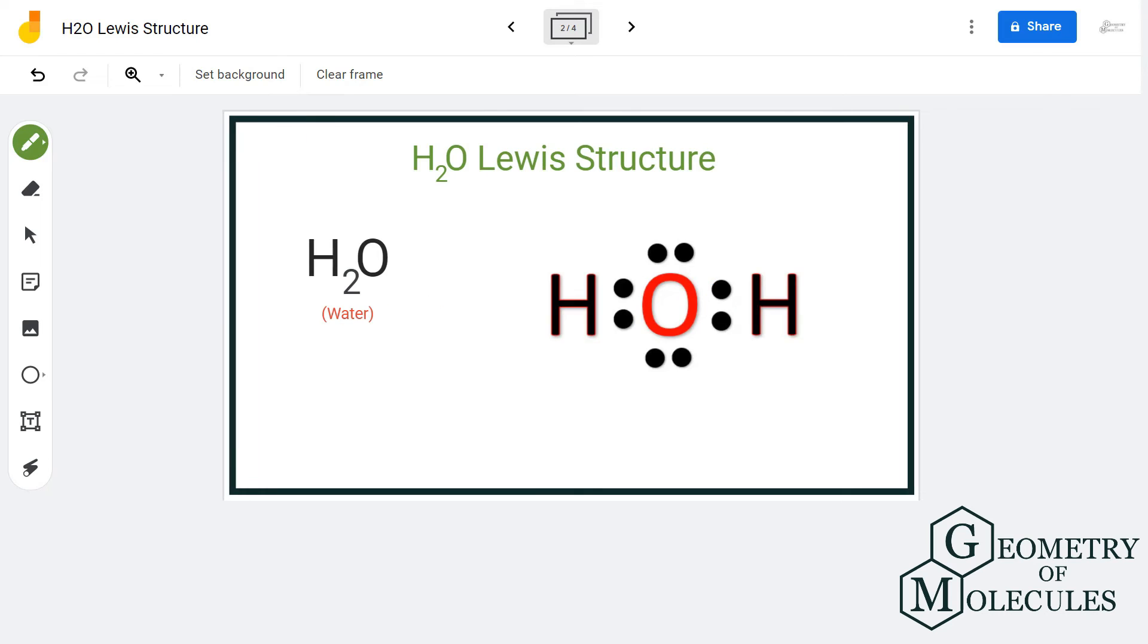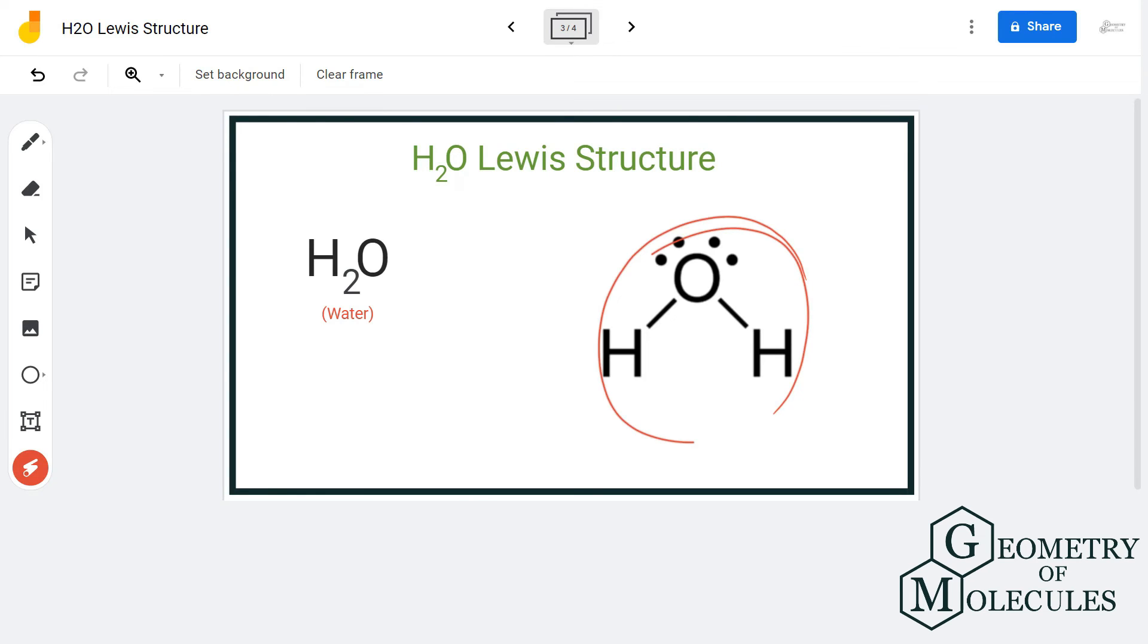This is the Lewis structure for H2O in which there are two single bonds between hydrogen and oxygen atoms and there are two lone pairs of electrons on oxygen atom. To conclude, we can say that in Lewis structure of H2O molecule there are eight valence electrons, out of which four are used up to make bonds and four are lone pairs of electrons.